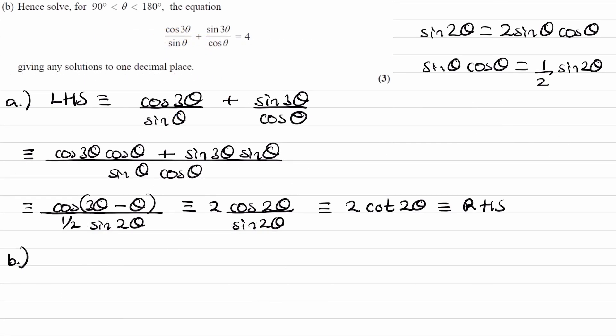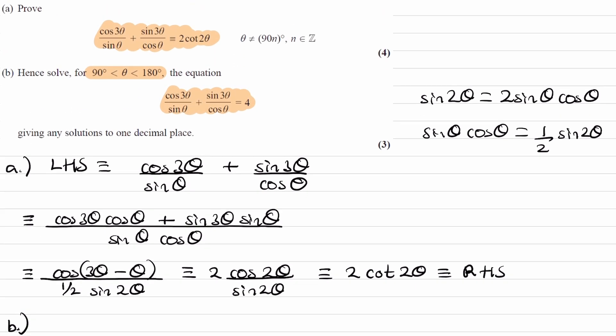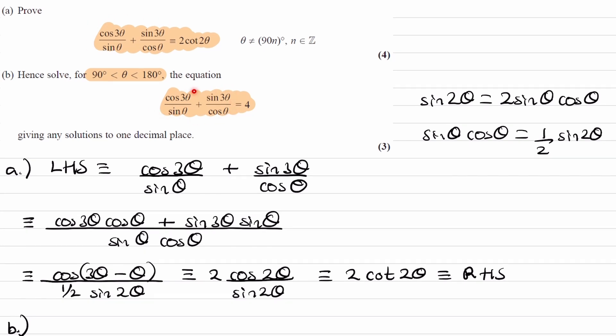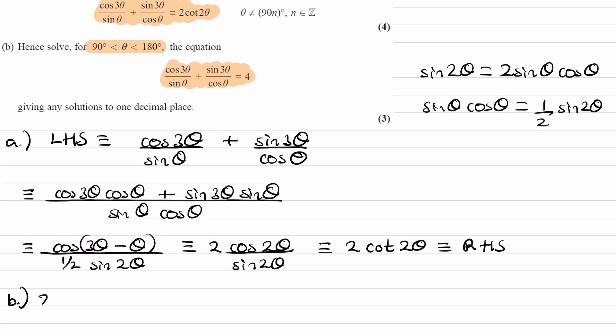Part B, hence solve between 90 and 180 degrees, this equation here. So, that equation is very similar to what we have above. What we have here is the same as what we have here. And therefore, this can be replaced with 2 cot 2 theta. So, our equation then becomes 2 cot 2 theta is equal to 4.